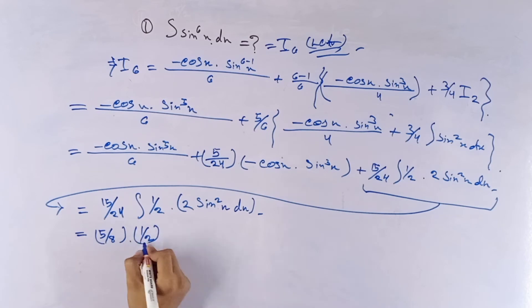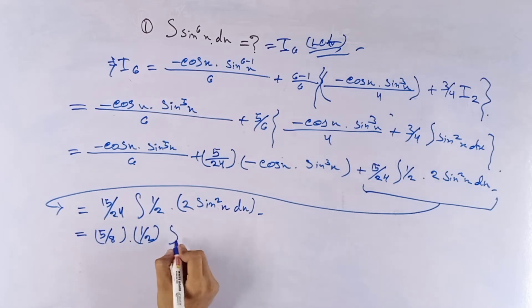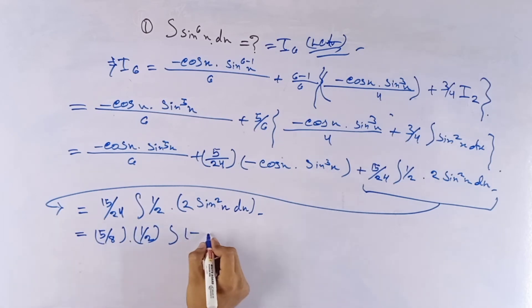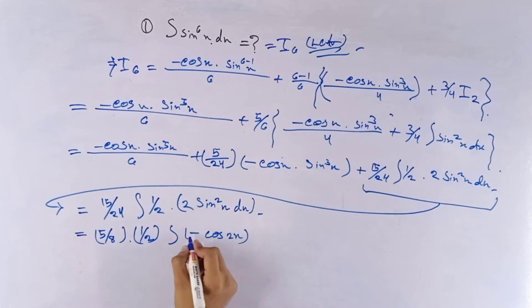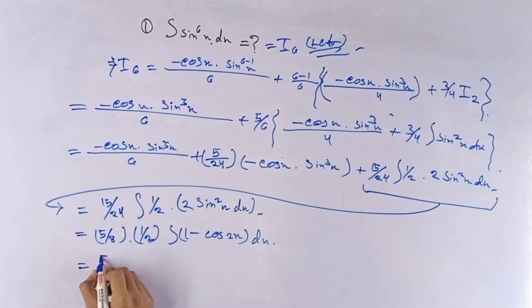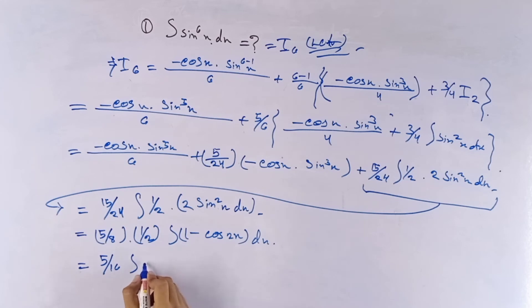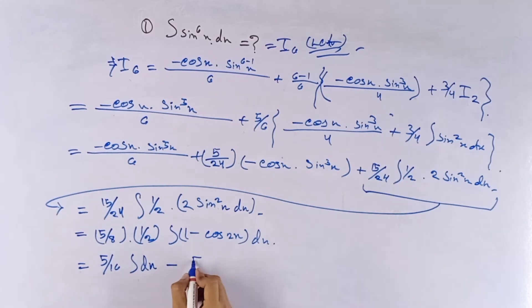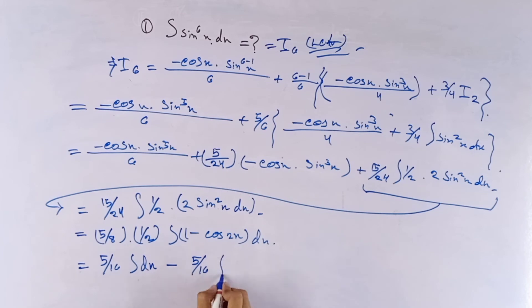That equals to 5 by 8 times 1 by 2 of the integration of 1 minus cos 2x dx, since we know 2 sin²x equals 1 minus cos 2x.